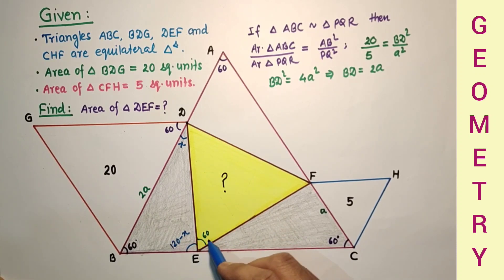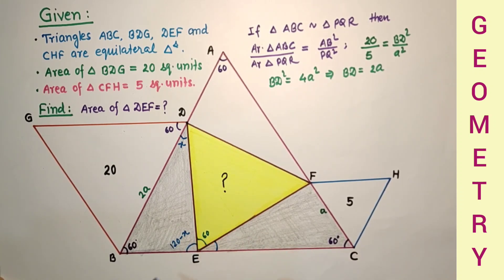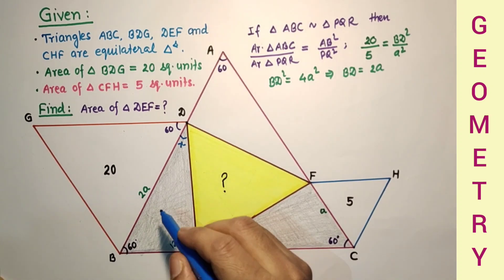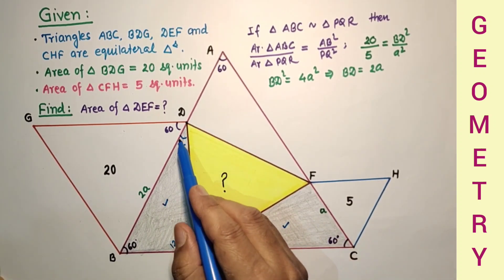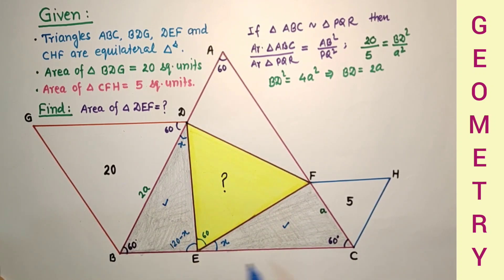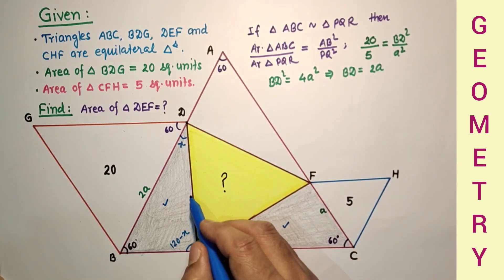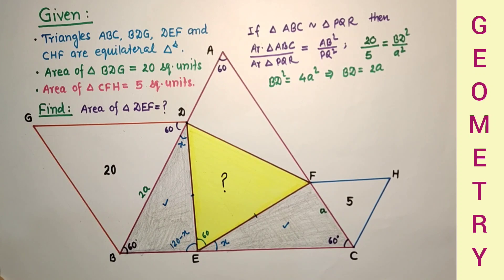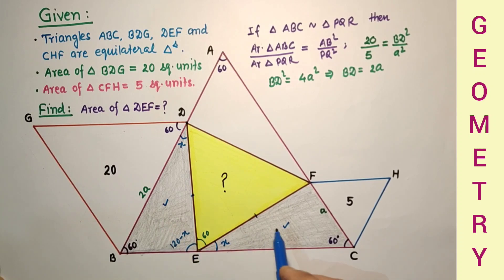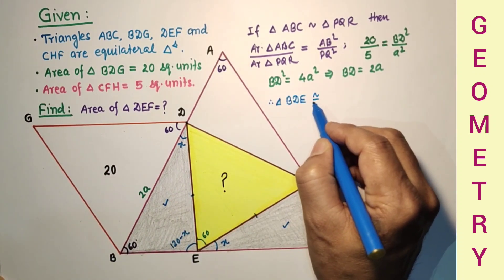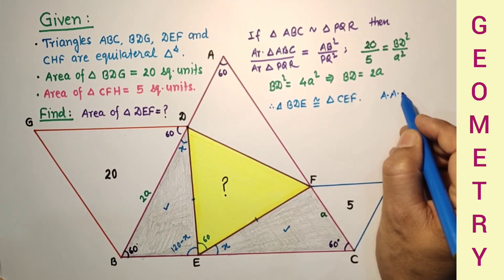If we add 120 minus X and 60, it gives 180 minus X. Subtracting from 180 gives X. So this angle equals this angle, both are 60, and DE equals AF. By AAS test of congruency, triangle BDE is congruent to triangle CEF.